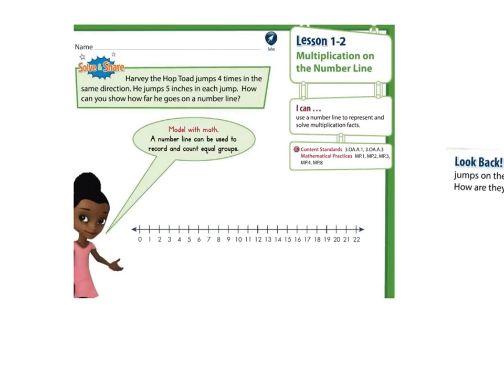Take another closer look at your word problem. Harvey the Hop Toad jumps four times in the same direction. He jumps five inches each jump. How can you show how far he goes on a number line? If you take a look at our number line, always starting at zero. Let's jump five inches.